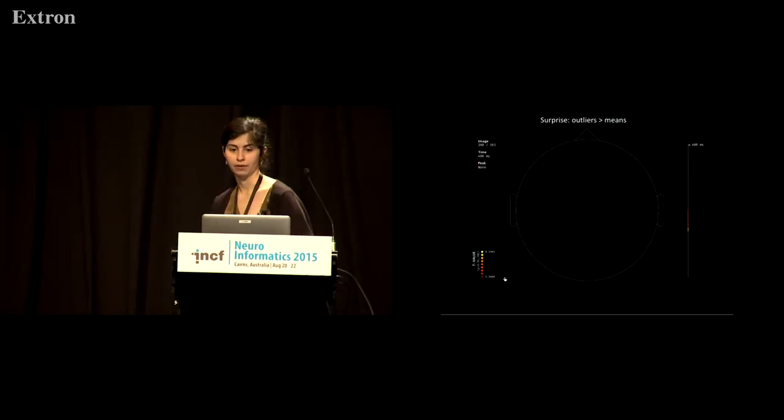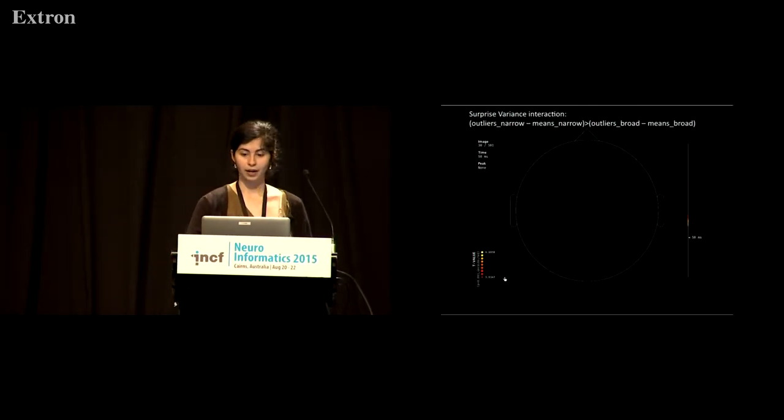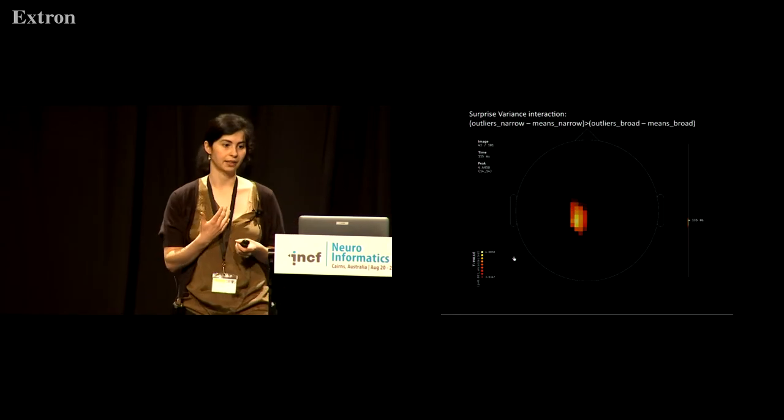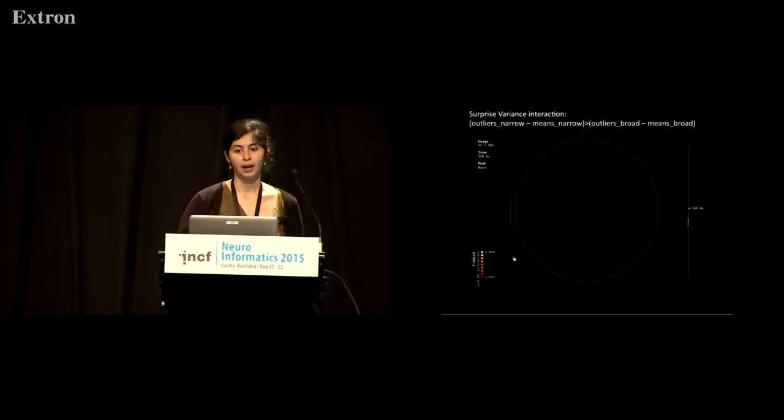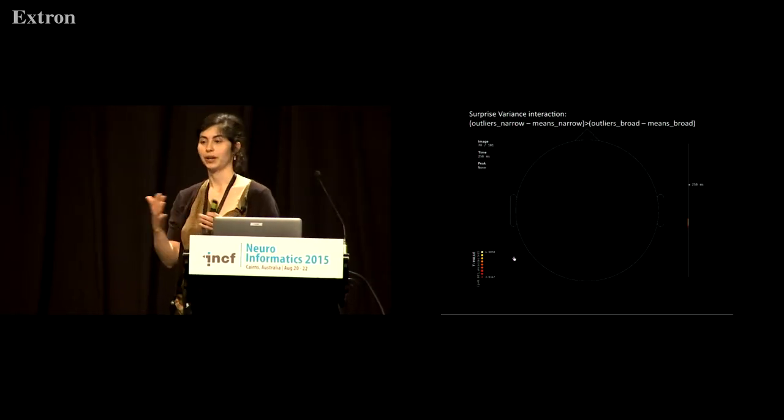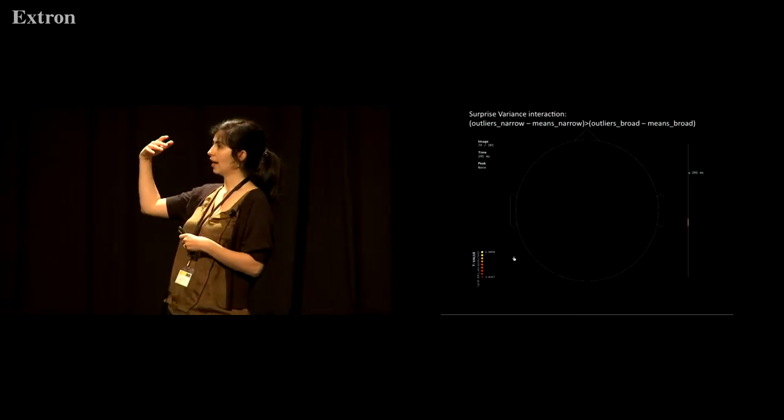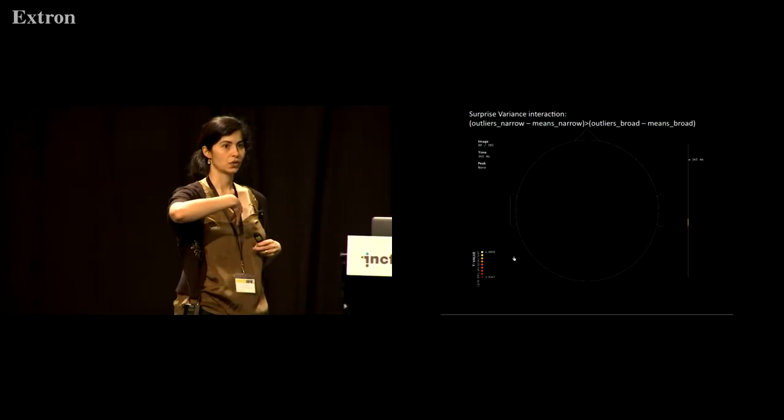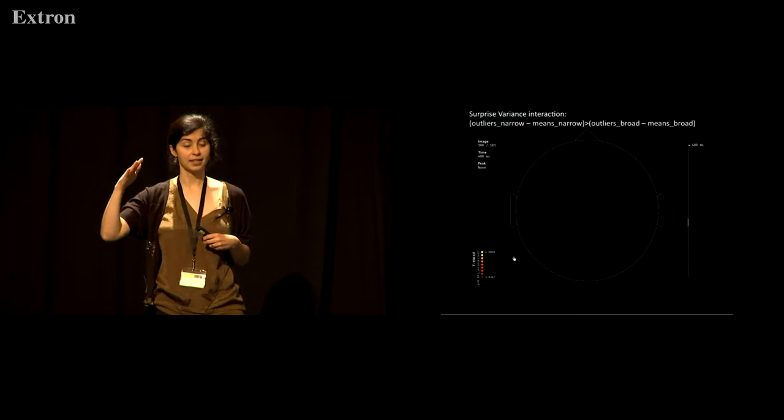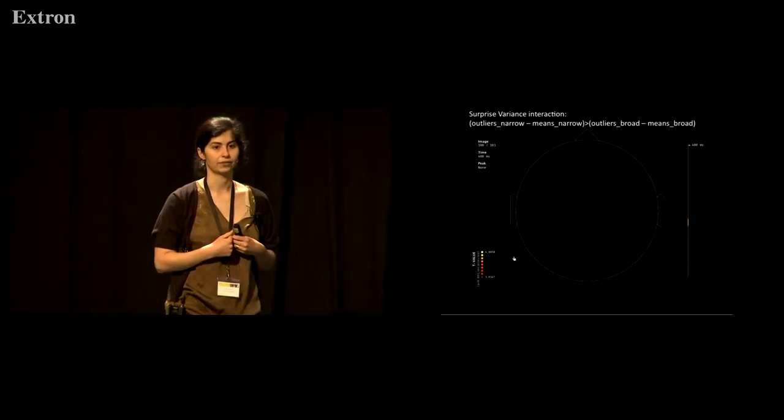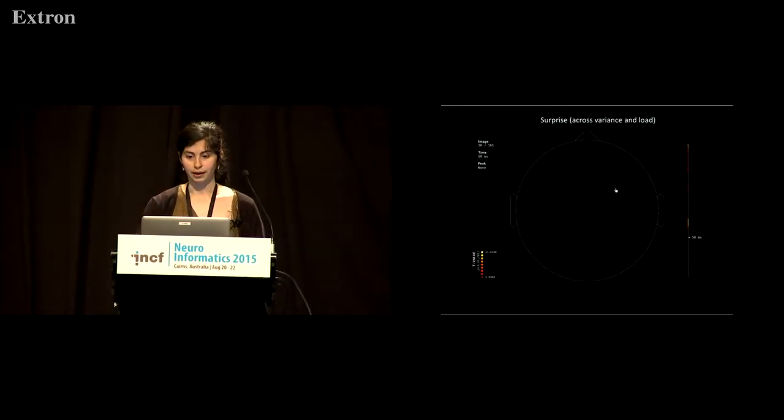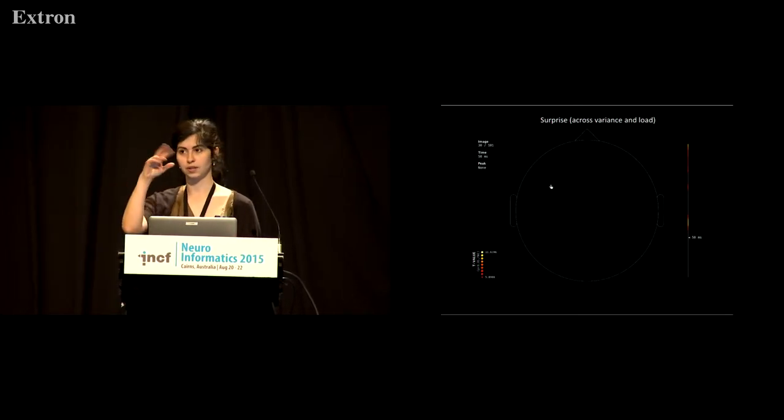Then here I'll show you the interaction between surprise and variance. This is really asking the question: where in space and time are outliers bigger than the means in the context of the narrow as compared to the broad distribution? The previous video shows that the brain is sensitive to outliers, and this one shows that the brain is sensitive to the variance of a statistical distribution.